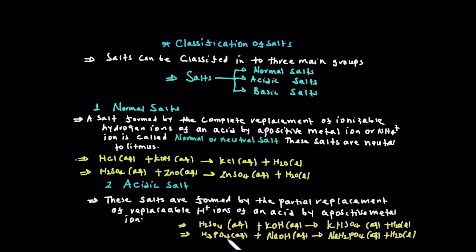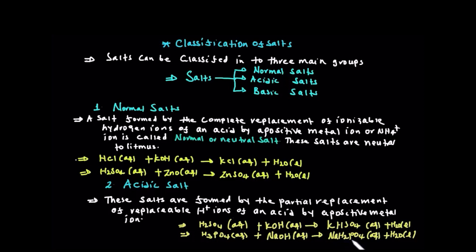For example, if phosphoric acid reacts and only some hydroxide replaces hydrogen, we get phosphates that still contain ionizable hydrogen — this is still an acidic salt. When the hydrogen is still present, it is classified as acidic salt.